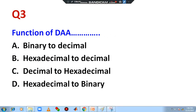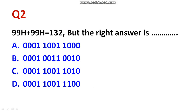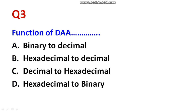Question 3: What is the function of DAA? DAA is nothing but decimal adjust after addition. As shown in the example, the right answer is 198 but it is showing 132 in hexadecimal. So hexadecimal should be converted into decimal value, and for that purpose we are using DAA. DAA is used for converting hexadecimal to decimal. D is the right answer.